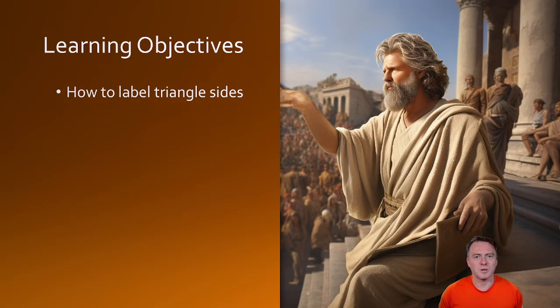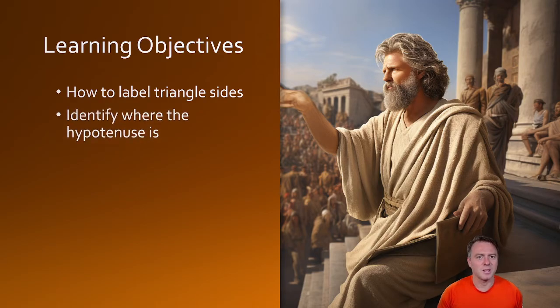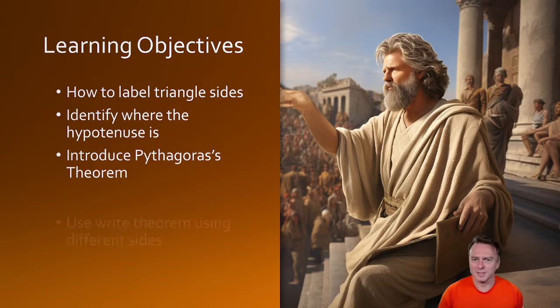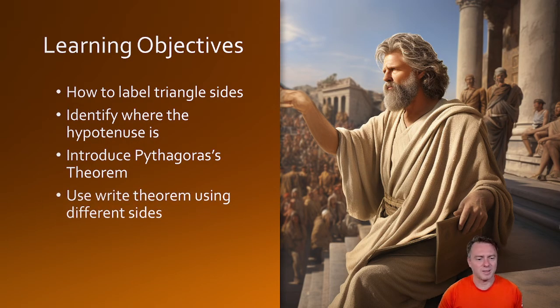And we're going to do that first with this little diagram which we're about to do. So the learning objectives that I have is that we're going to learn how to label a triangle with the sides, identify where the hypotenuse is and then introduce Pythagoras's theorem and then we're going to learn how to rewrite the theorem using different side notation.